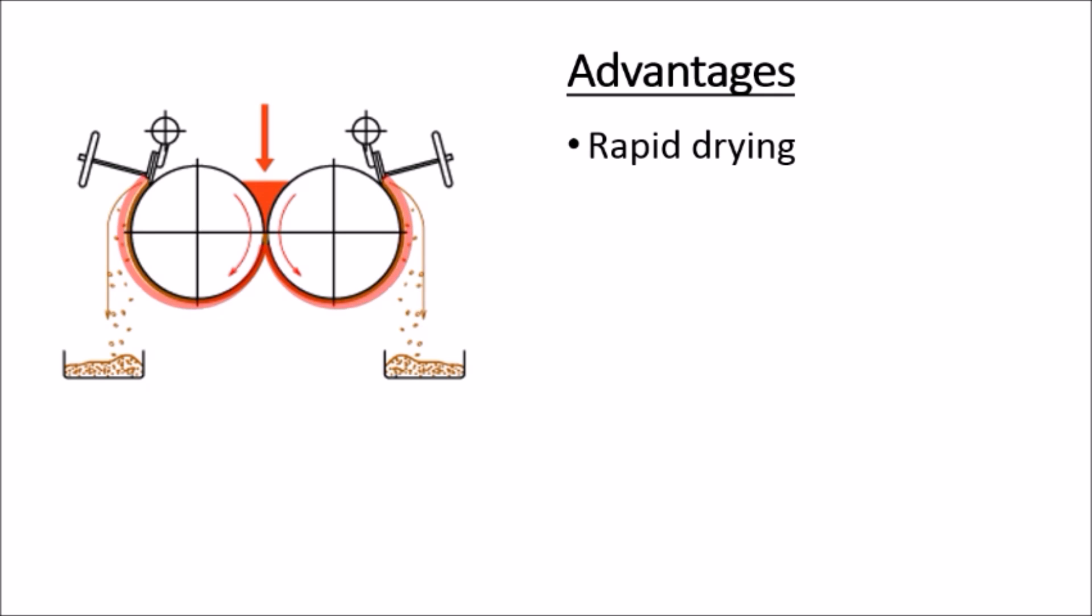The thin film spread over a large area results in rapid heat and mass transfer. Secondly, the equipment setup is compact. The drum dryer occupies much less space compared to other dryers.